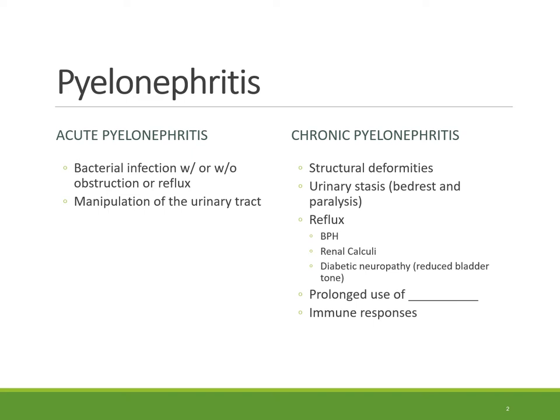Taking NSAIDs for lupus also puts patients at risk. The most common organism that causes pyelonephritis — whether acute or chronic — is E. coli, which comes from the GI tract. The other organism is Enterococcus faecalis. Both of these come from the GI tract and can cause either of these conditions.